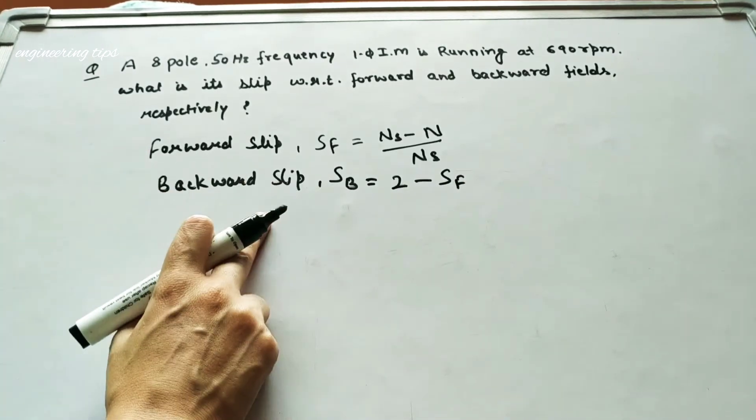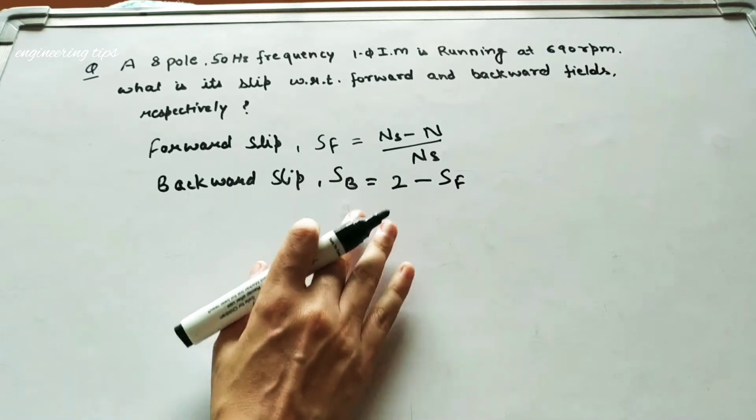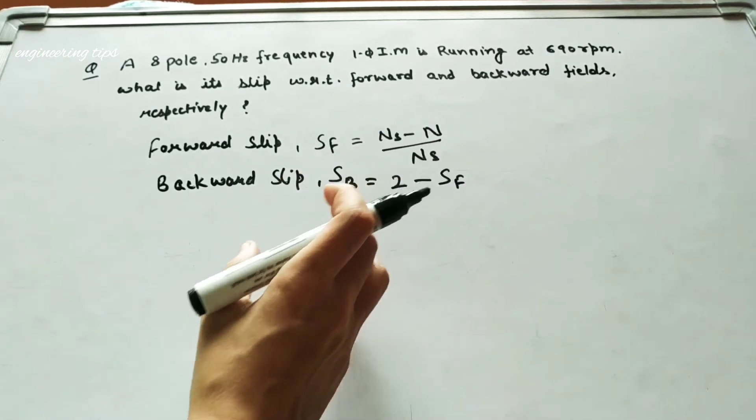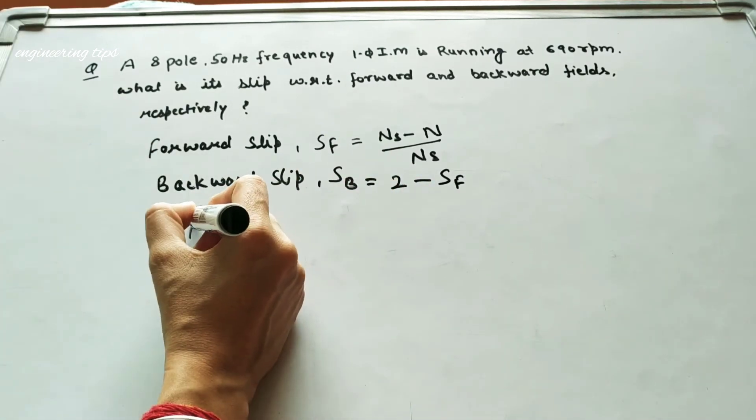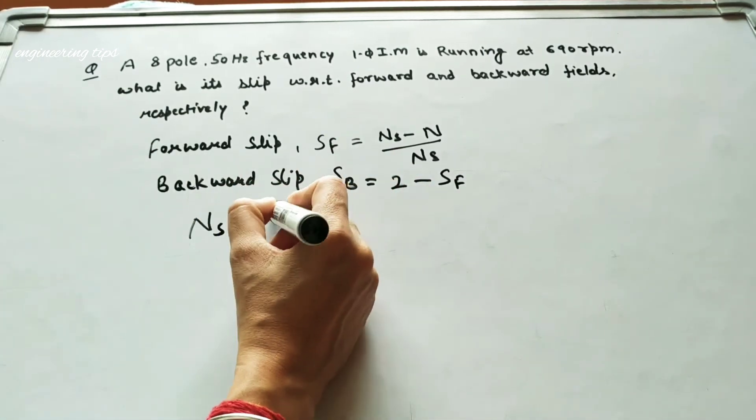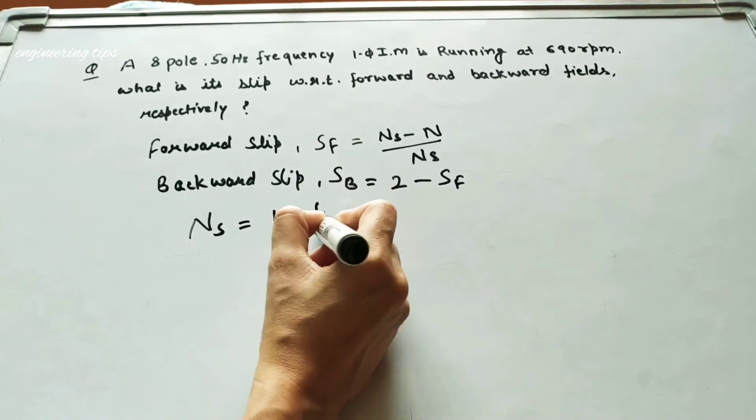So now, what is NS? First, we find the synchronous speed. What is NS? NS is basically 120F over P.